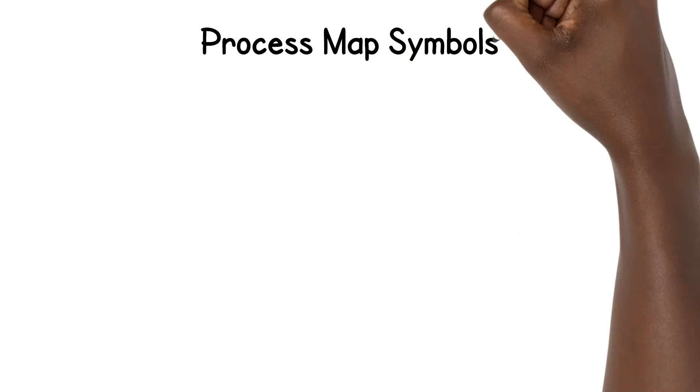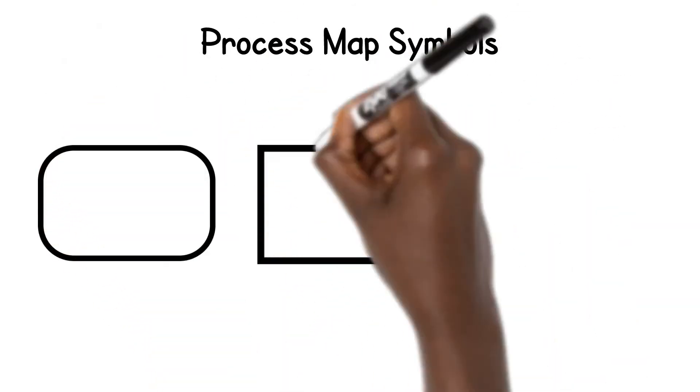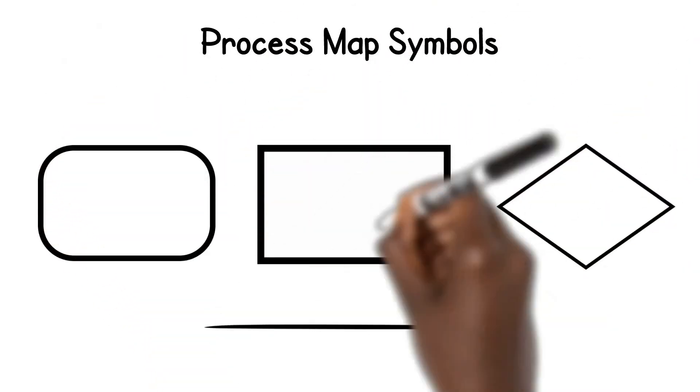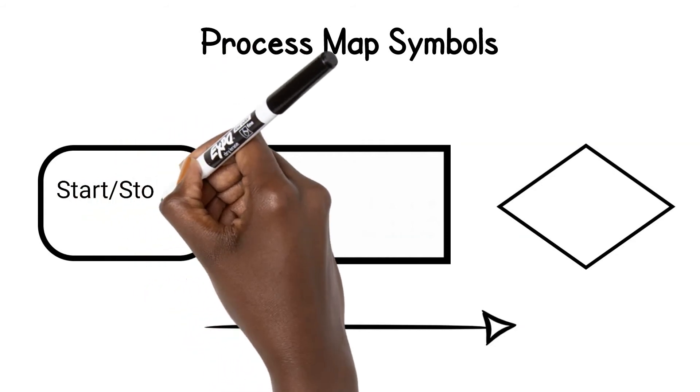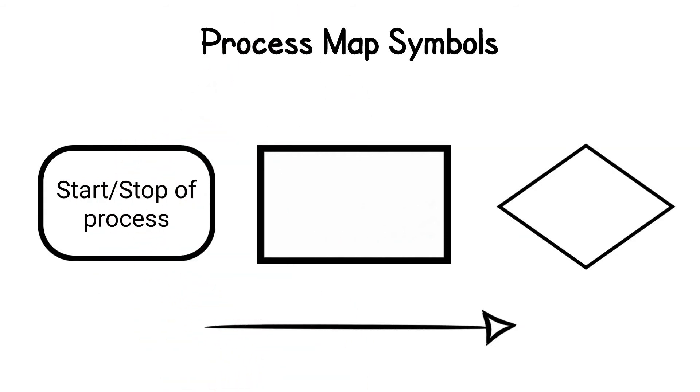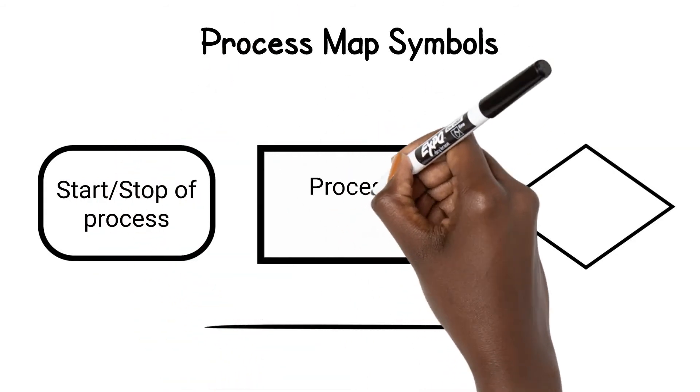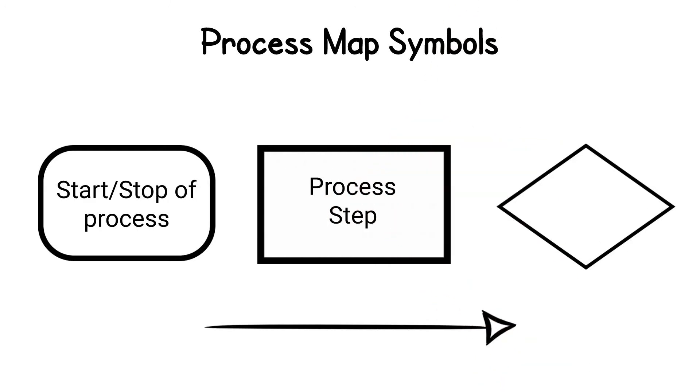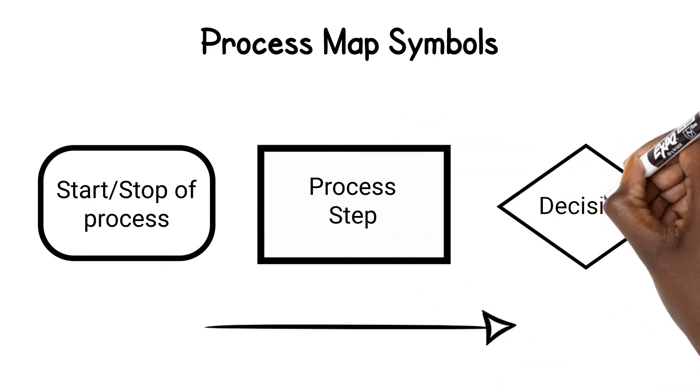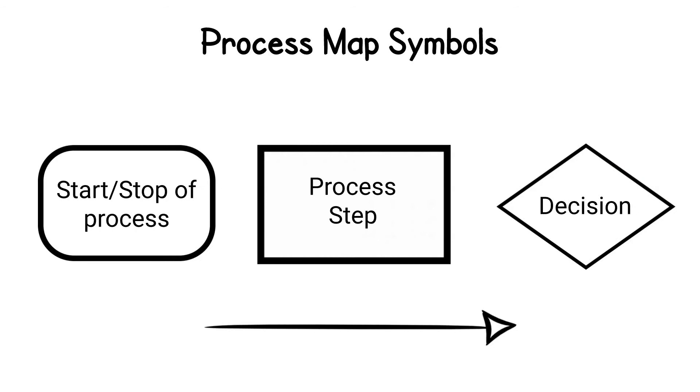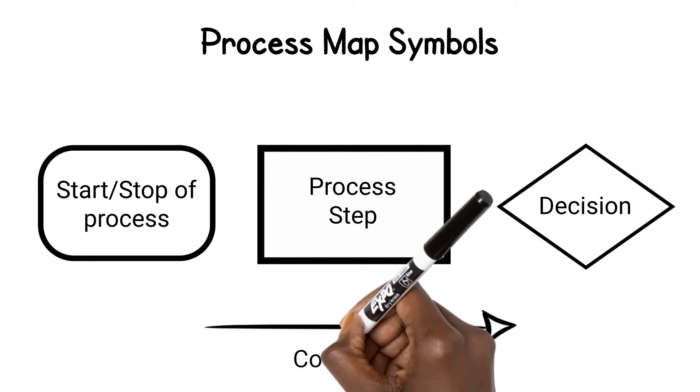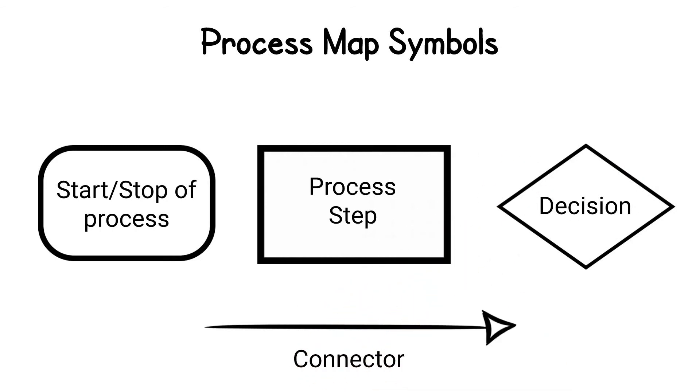These are the main icons that are used in process mapping. A rounded rectangle symbolizes the beginning or ending of a process. The regular rectangle symbolizes tasks within a process, and the diamond shape represents decision points that result in different processes. All steps are connected with arrows.